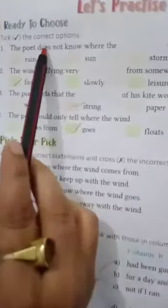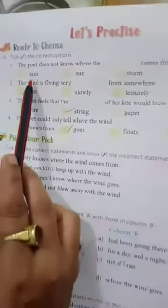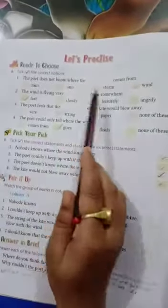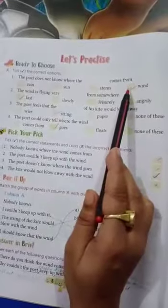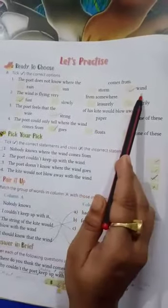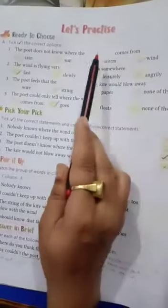Tick the correct option. The poet does not know where the blank comes from. The right answer is wind. Tick here and fill it.